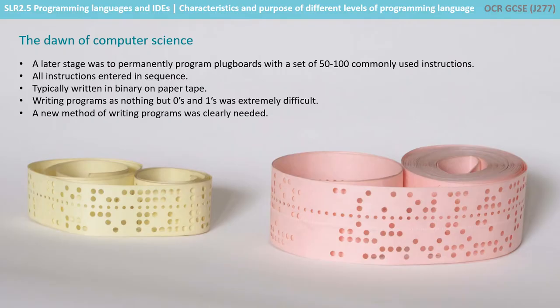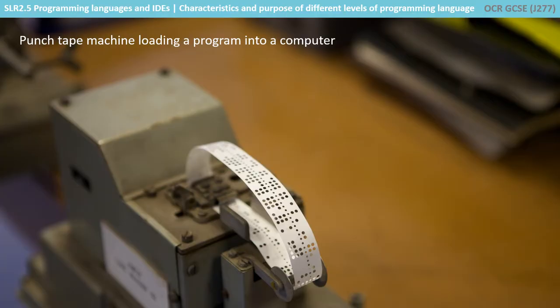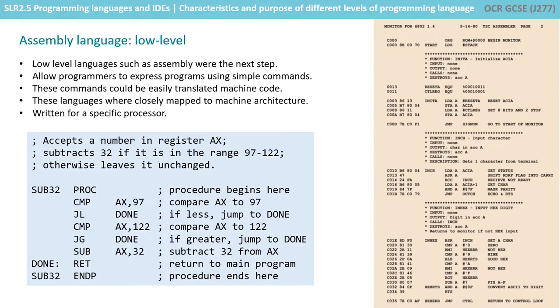Typically, programs were written in binary on paper tape. This is clearly extremely difficult for programmers to write because using zeros and ones is very complicated, and therefore a new method of writing code needed to be found. Low-level languages such as Assembly were developed, which allowed programmers to express programs using simple commands which could be easily translated into machine code.